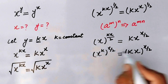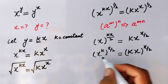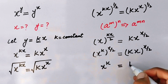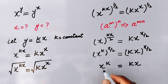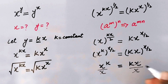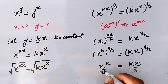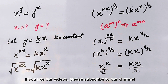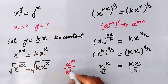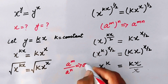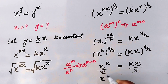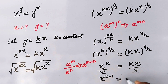We can see that on both sides the power is the same, so we can compare the base values and write x power k equal to k times x. Then we divide both sides by x. This x will cancel with this x, and by using the rule a power m over a power n equals a power m minus n, our equation becomes x power k minus 1 equal to k.